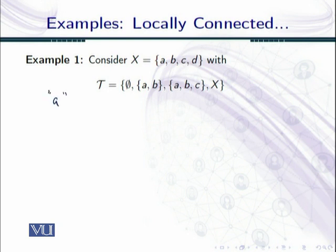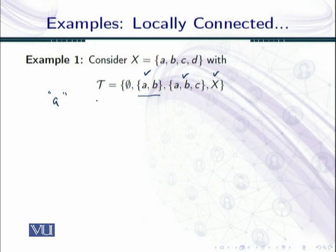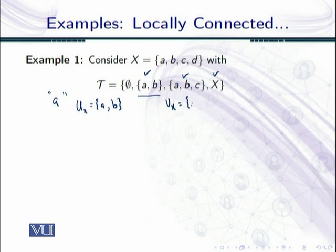Corresponding to a, let us see how many open subsets contain a — there are three. But I will check only for the smallest one, because the rest are its supersets, so whatever holds for the smallest will automatically hold for those as well. Corresponding to a, if I take {a,b} as U, one can see that corresponding to this there exists V which is again the same open set, and that is connected.